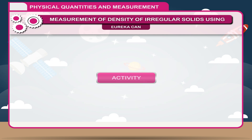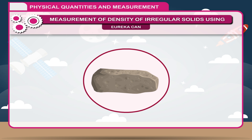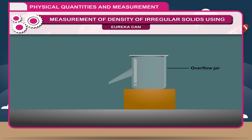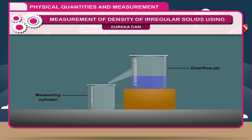Activity: To measure the volume of an irregular solid using an overflow jar or Eureka can. Take an overflow jar made of metal or glass with an overflow outlet as shown in the figure. Pour water into the jar till it just overflows. Place a measuring cylinder just under the spout of the overflow jar.